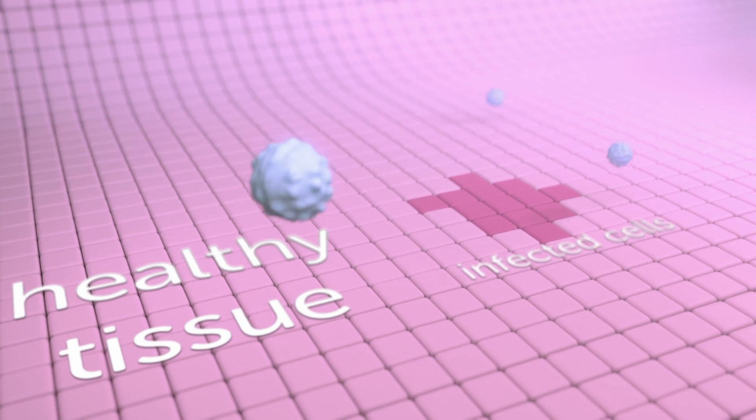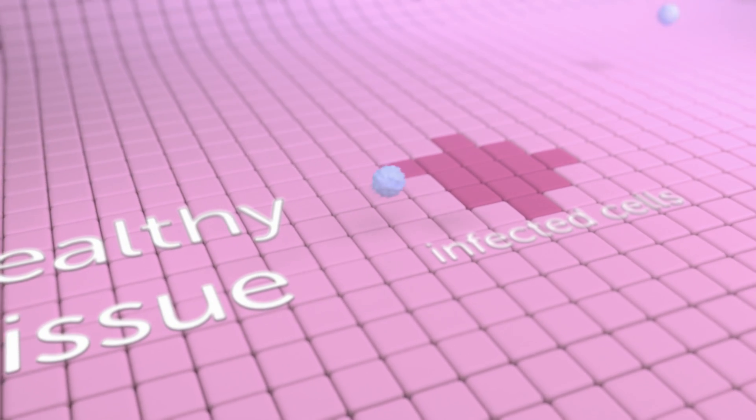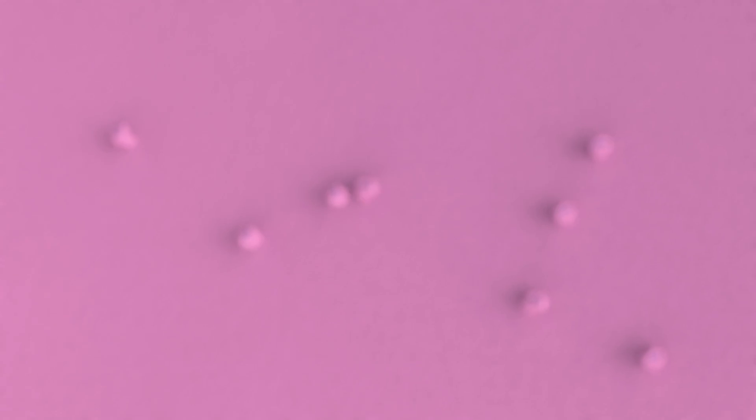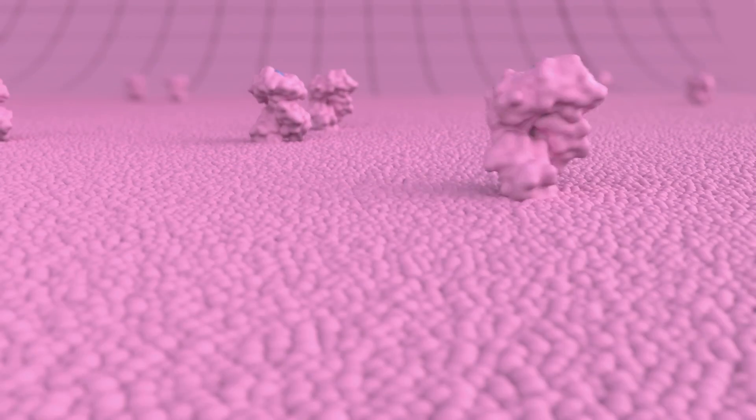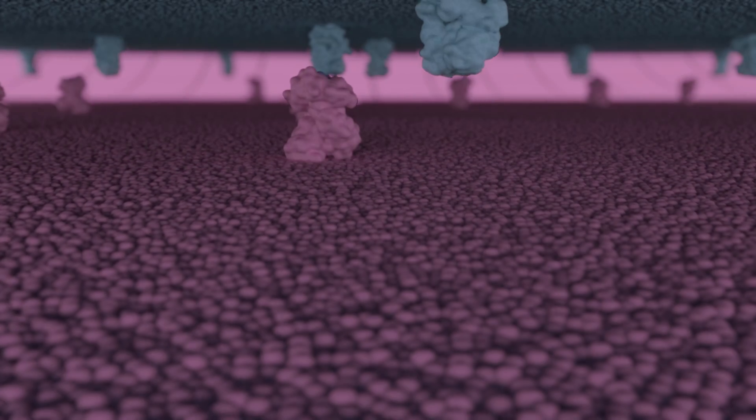These cells need to spot the difference between healthy and unhealthy tissues. For example, when our cells are infected with a virus, they need to be destroyed. Infected cells display different molecules on their surface from healthy cells, indicating they're damaged.